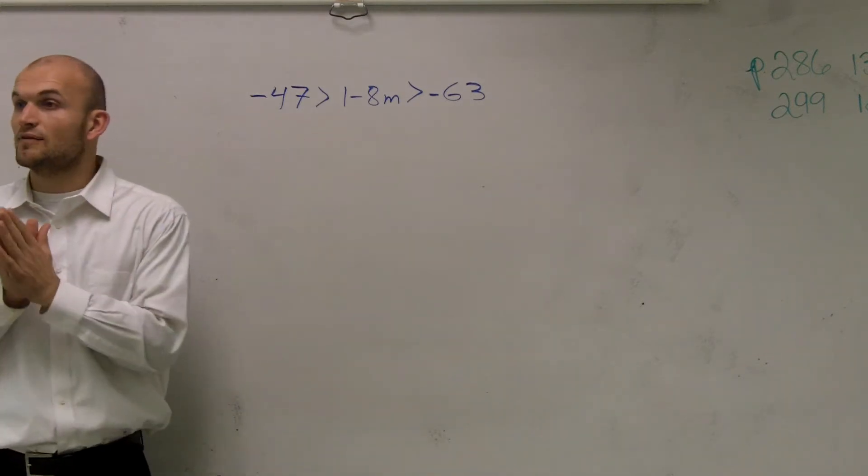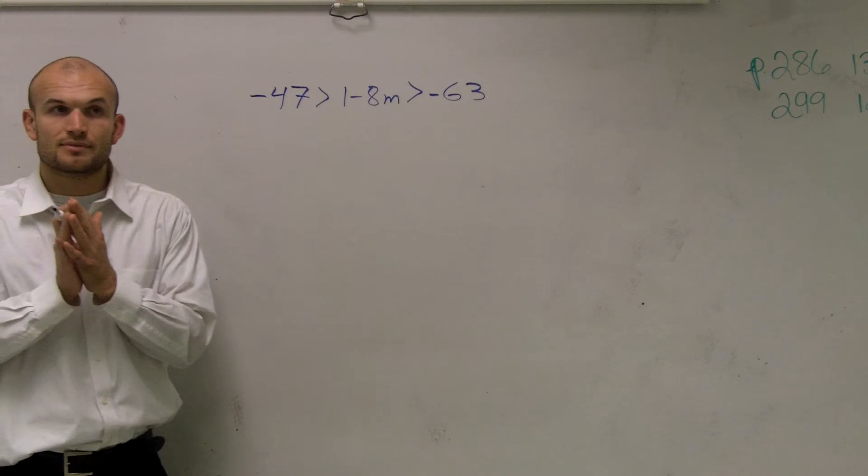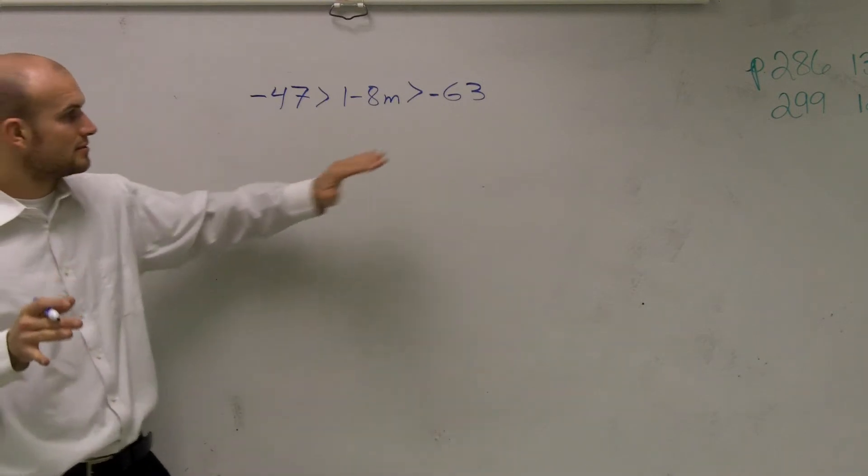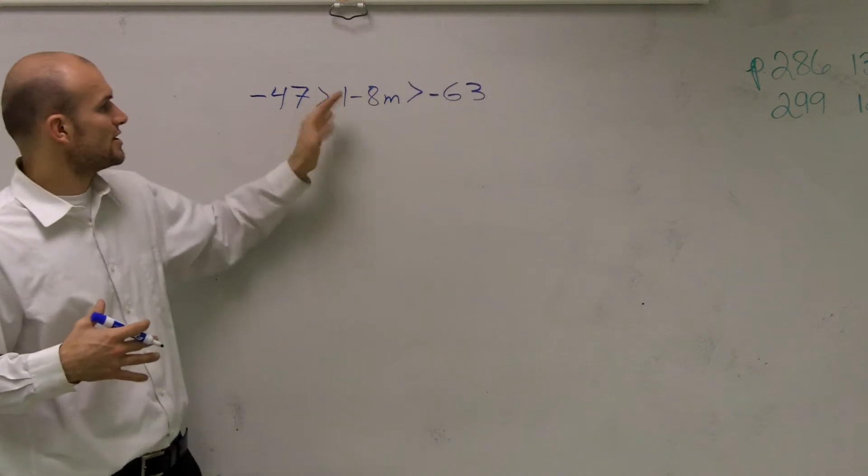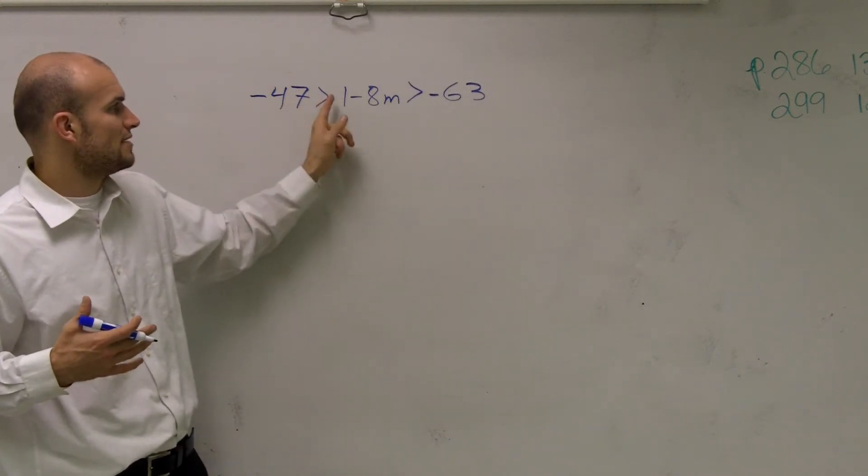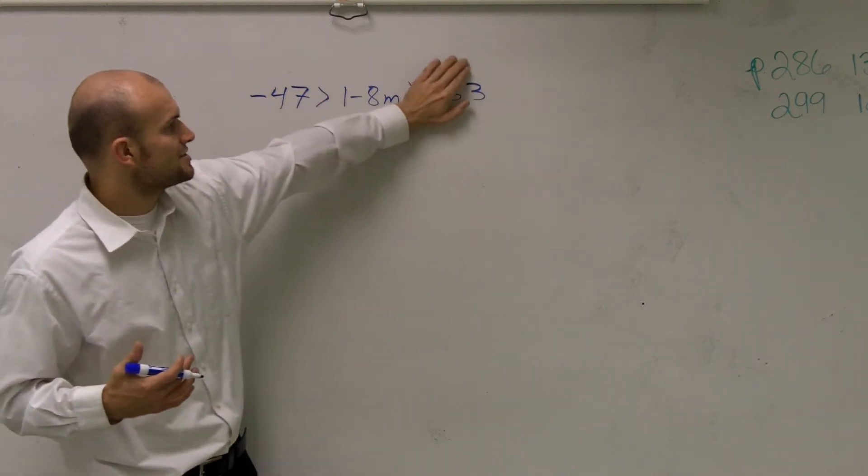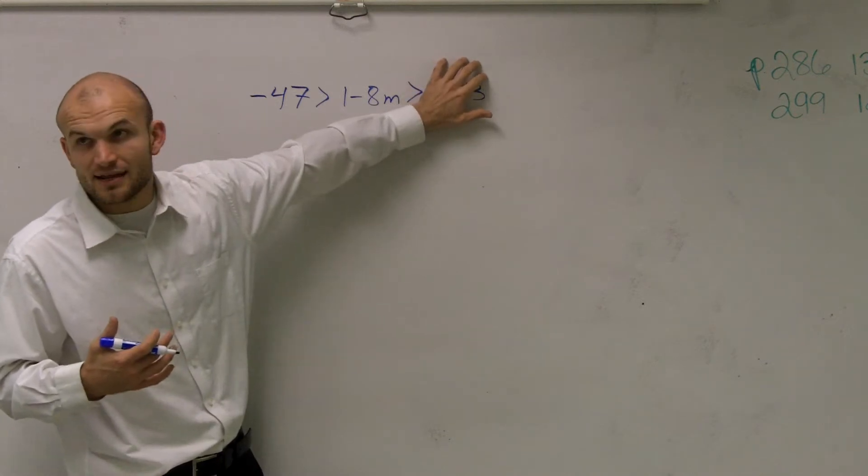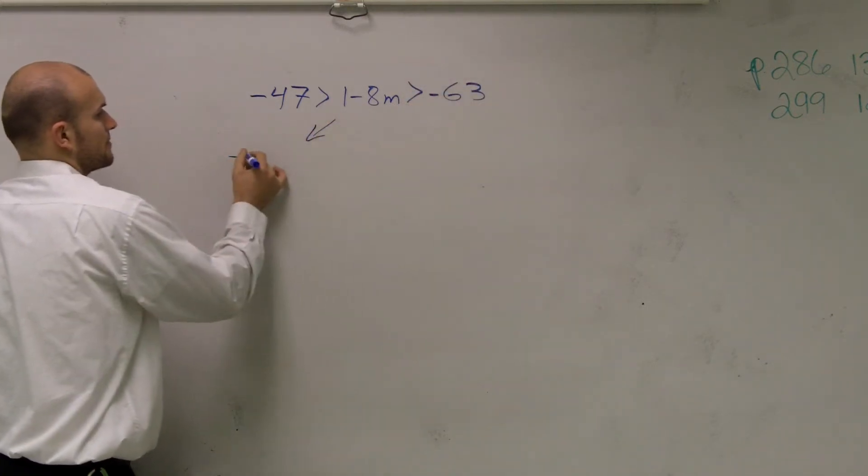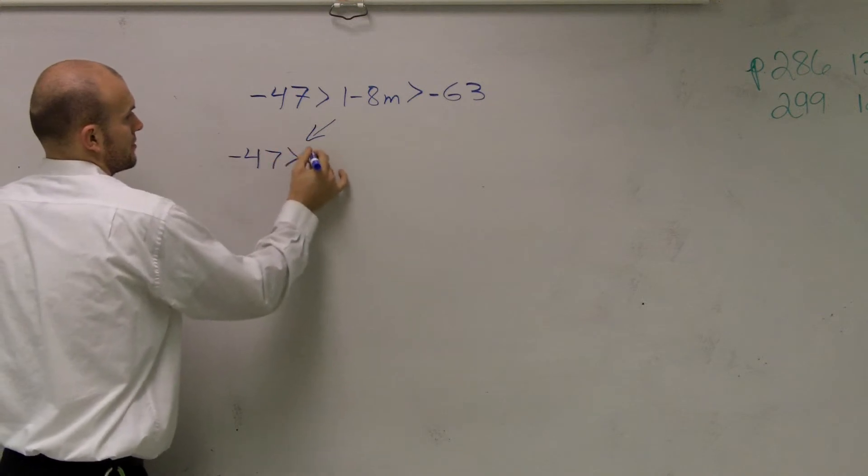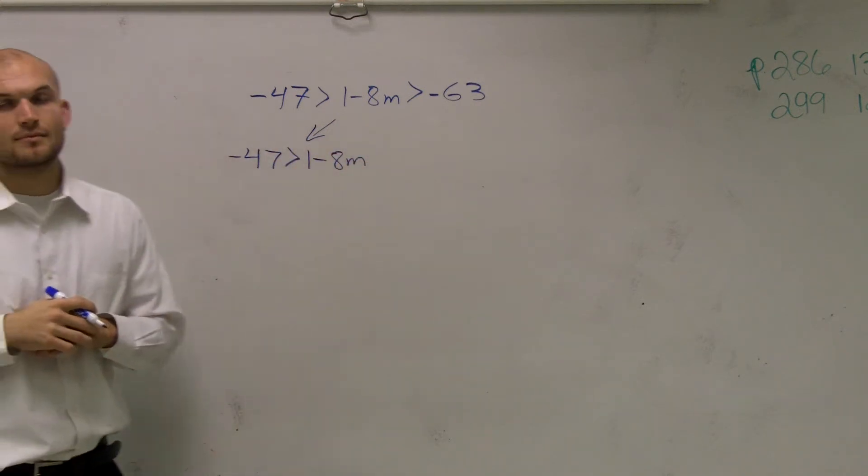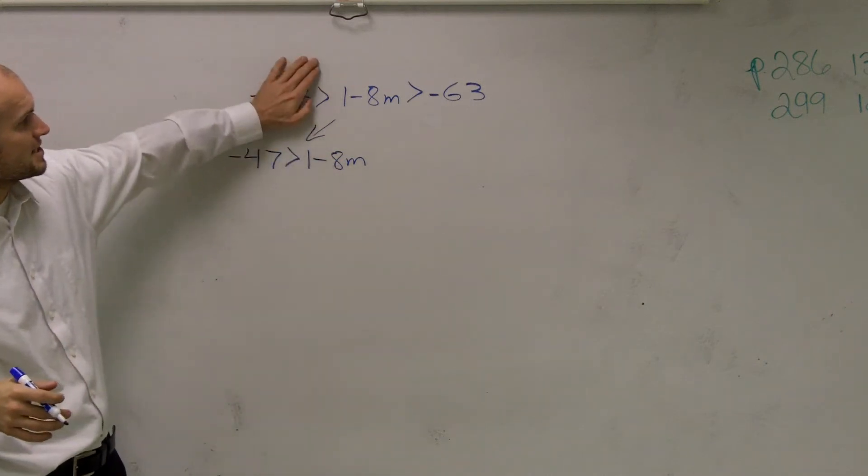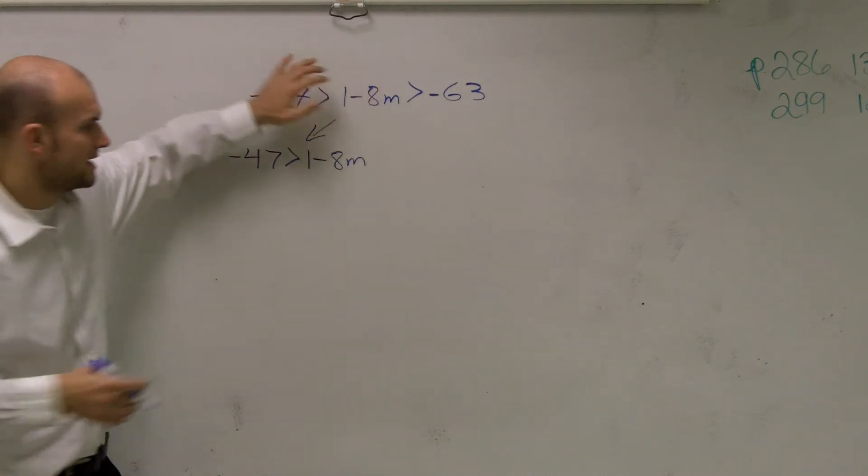So here's one way we can solve the inequality, ladies and gentlemen. One way we can solve it is I'm going to show you two different ways, but in this video I'll show you this way. First way, if you guys have noticed, this says negative 47 is greater than 1 minus 8m. Let's just cover up the right side of that and just write that inequality. Then let's cover up this answer and just write that inequality.